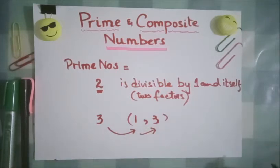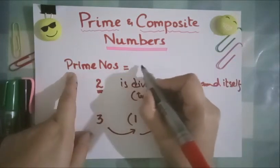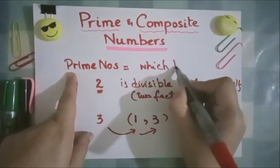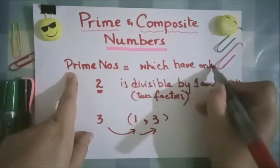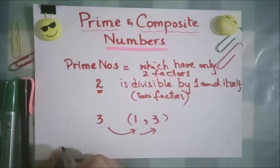which are divisible by the number itself and 1. It has only two factors. So I am going to write over here: prime numbers are those numbers which have only two factors. Now you can see more examples. I have